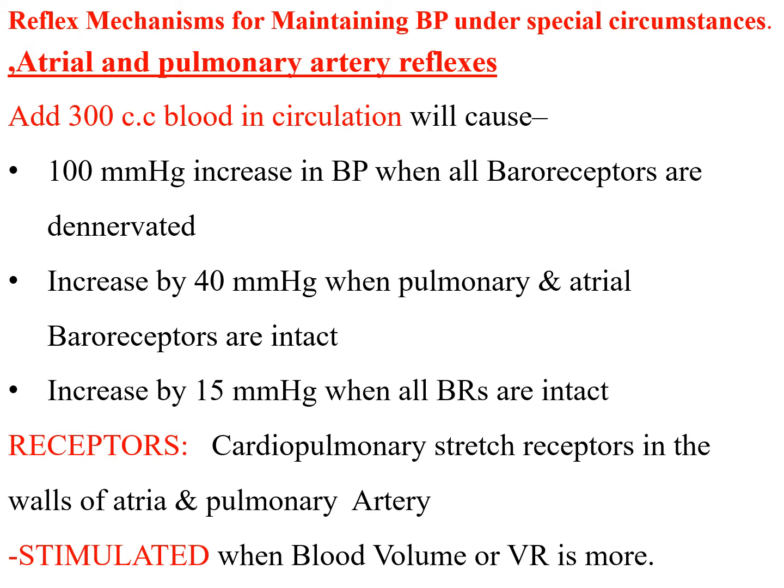We have been discussing reflex mechanisms for maintaining blood pressure during postural hypotension, postural changes, and exercise. Now we will talk about reflex mechanisms under special circumstances. If we add 300 cc of blood into circulation, this causes a 100 mmHg increase in blood pressure when all baroreceptors are denervated. All baroreceptors — atrial, carotid, pulmonary, and renal — contribute to damping blood pressure by 100 mmHg.